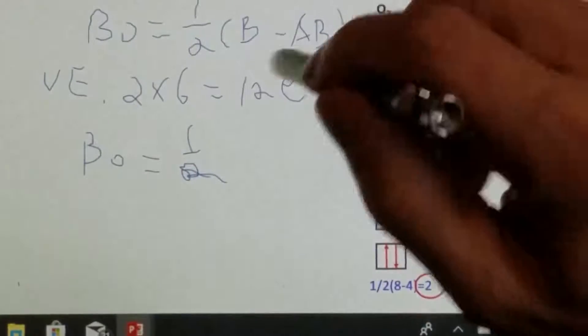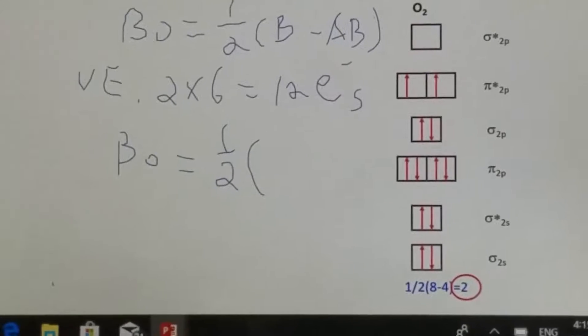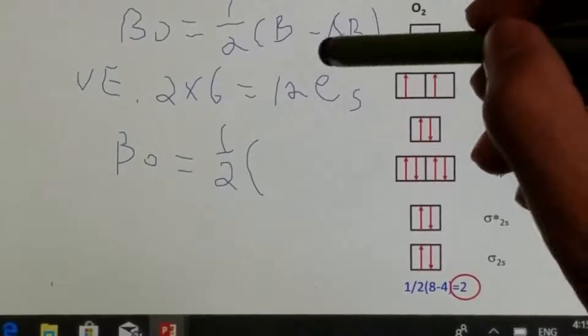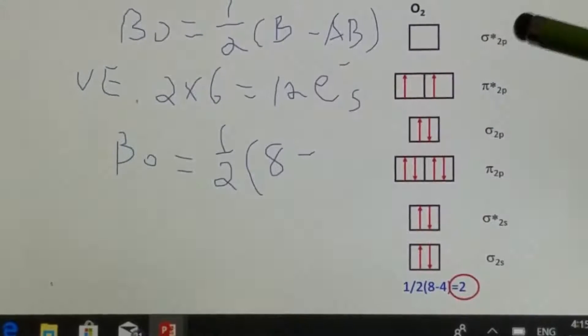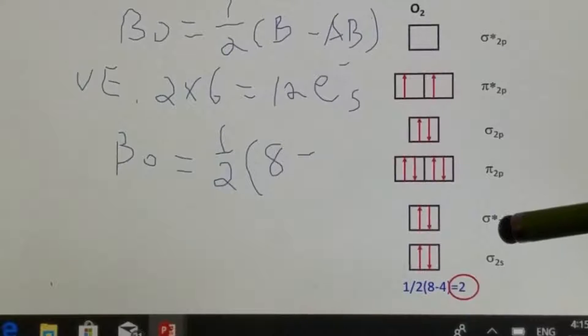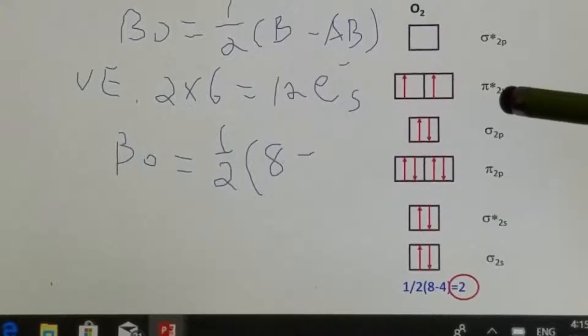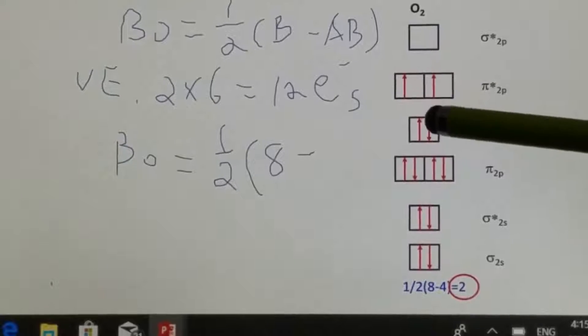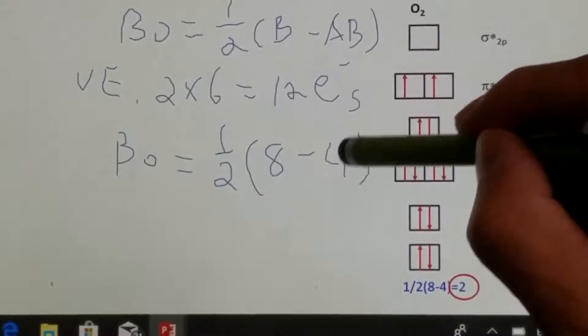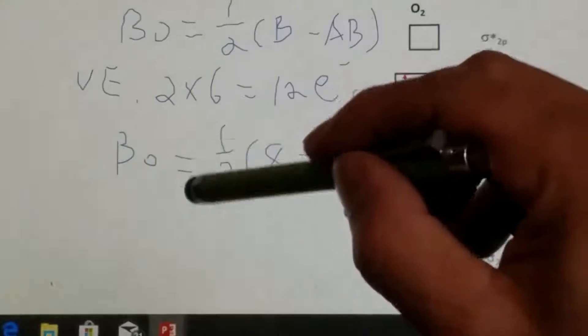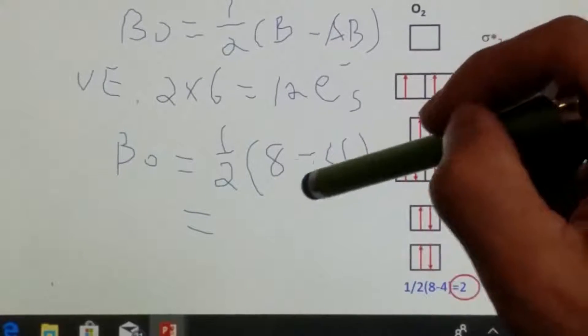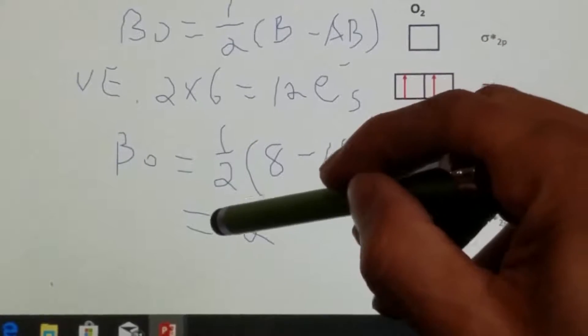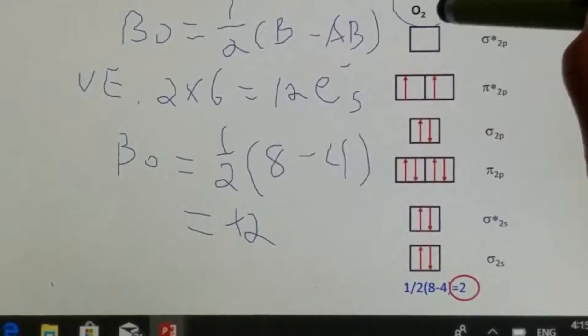One half times the number of bonding electrons, that's 8, and then the anti-bonding. We have sigma star, that's 2, and then pi 2p star, that's another 2, total of 4. This gives the bond order for O2, positive 2.